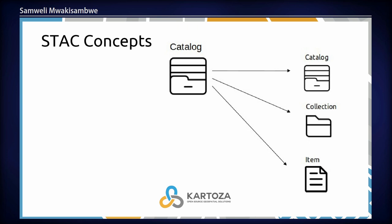The STAC components are basically catalog, collection, and item. Catalog is more of a folder for other components, and it is possible in STAC for a catalog to host another catalog. Collection is a unit for storing items. And the item is an instance that stores the assets, which is the main component for the STAC specification.